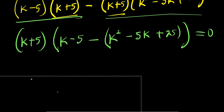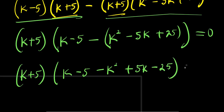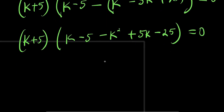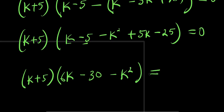Expanding (k plus 5)(k minus 5) minus k squared plus 5k minus 25 equals zero. Combining like terms: k plus 5k is 6k, and combining constants gives minus 30. So we have (k plus 5) times (minus k squared plus 6k minus 30) equals zero.